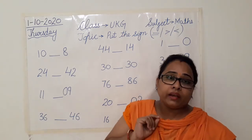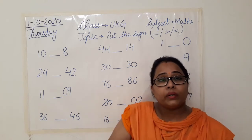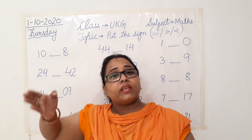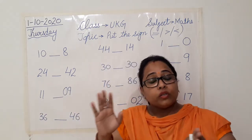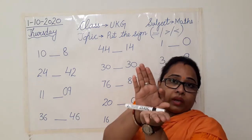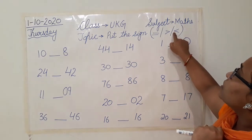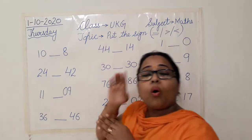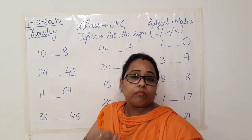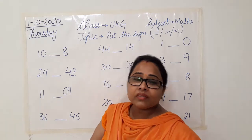If you have to show less than for a number, which sign will you use? The mouth will always be towards the greater number. The open part — or the pointed part — will always be towards the lesser number, the number that is small. Clear? You remember all this?